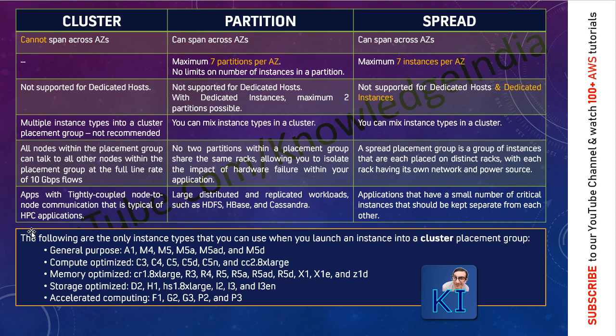This particular placement group type can span across availability zones. For example, within a region, you may create a placement group which will have partitions in availability zone A, partitions in availability zone B, and so on.